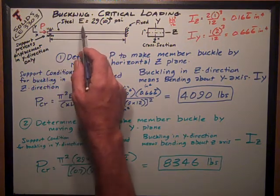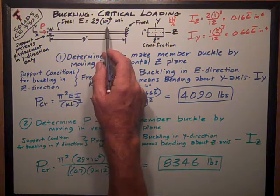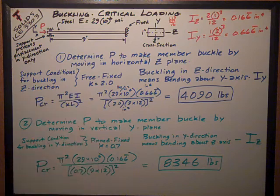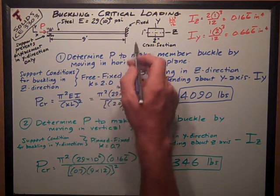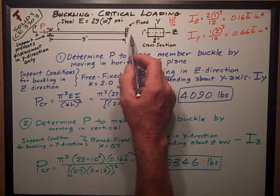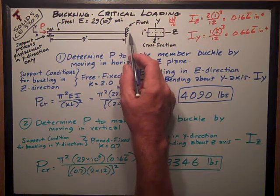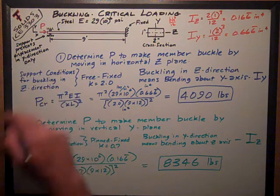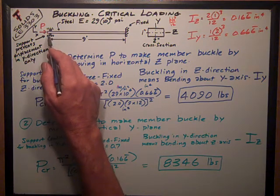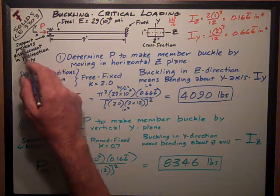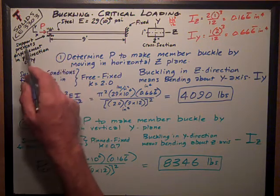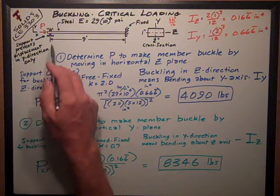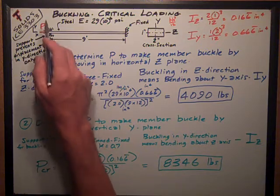It's made out of steel. Young's modulus is 29 million, 29×10⁶ PSI. Support conditions are we've got a standard fixed condition down here at this end on the right. At this end we have two rollers and you were told in the problem that these rollers, the support prevents displacement in the Y direction only. That means it can't go anywhere up or down.